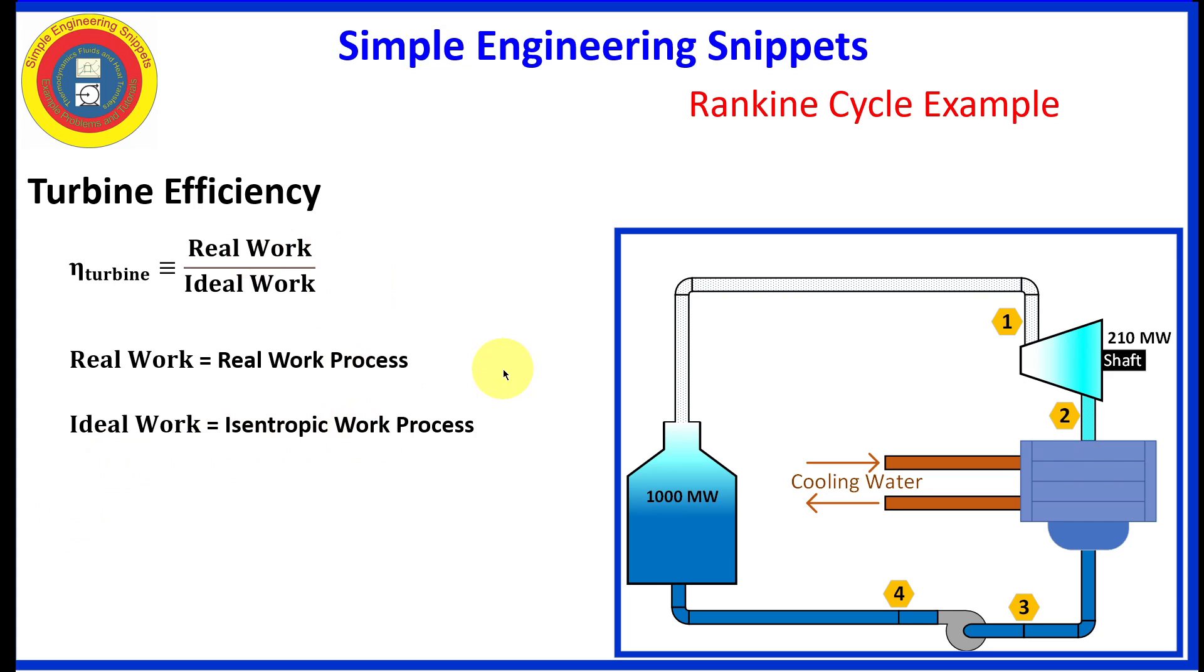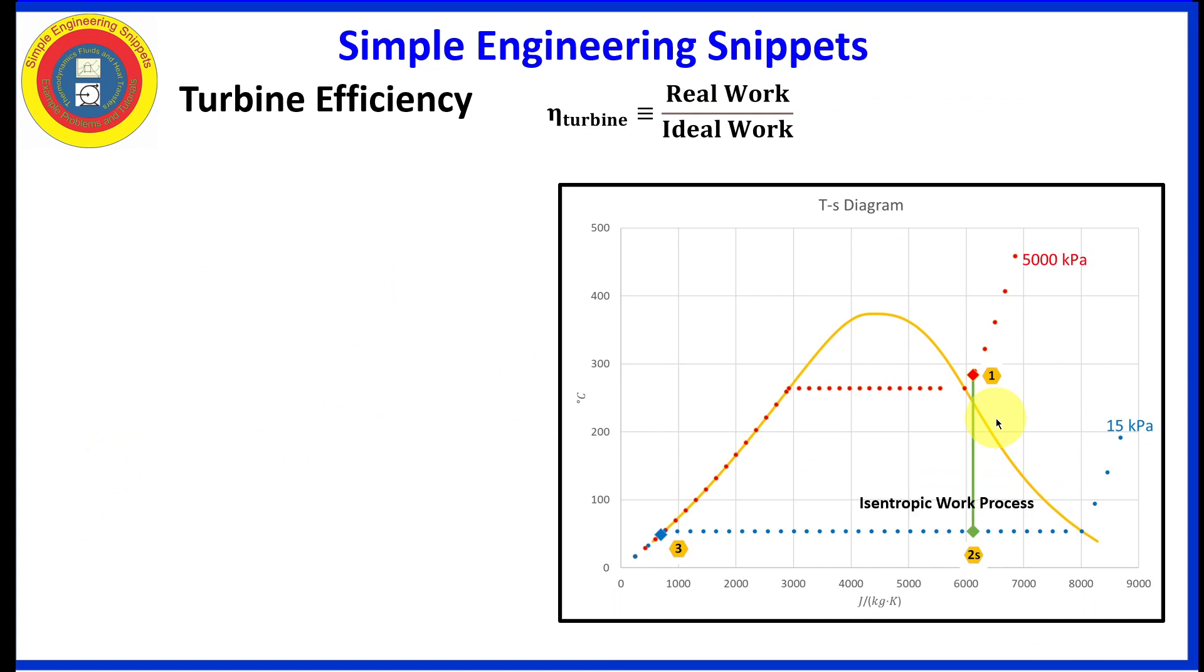And that is going to be an isentropic work process. And so let's draw that on our T-S diagram, our entropy diagram. It is a vertical line, shown with the green line here. And it's going down to a point labeled 2S. That is the isentropic point from going from one down to the lower isobar at 15 kilopascals.